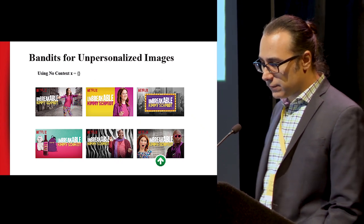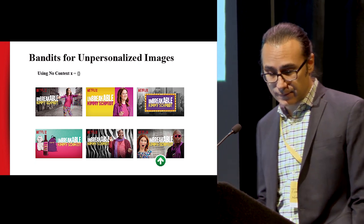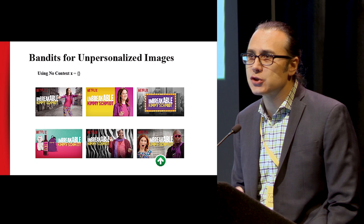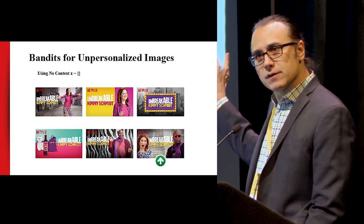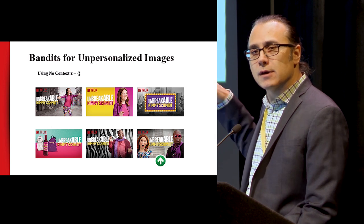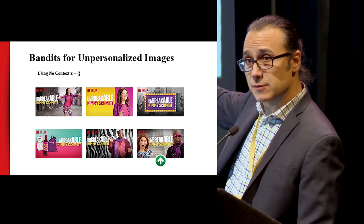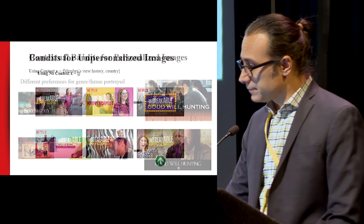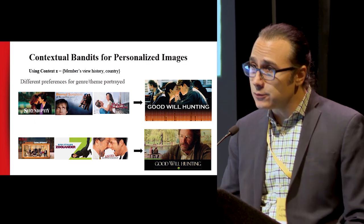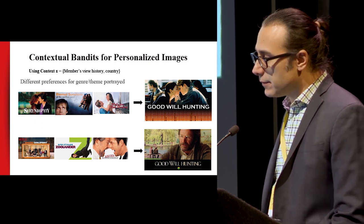Here's an example of figuring out the best image without any context — an unpersonalized, non-contextual bandit where we don't care about view history or country. By doing Thompson Sampling on six images, we quickly figure out the bottom-right image is the best one, getting the most rewards — just like being in a casino with six slot machines and figuring out the best one. Then we can include context — the user's view history — and ask: what's the best image for you based on your view history and the country you're in?